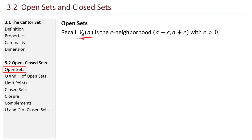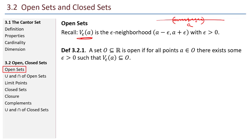Recall this notation: V sub epsilon of a is the epsilon neighborhood about a, with epsilon greater than zero. I imagine there's a number line with a on it. I go epsilon to the left, epsilon to the right. I don't include those endpoints, but I make the interval containing everything within epsilon of a. That is the epsilon neighborhood of a. Here's our definition: a set O contained in the real numbers is open if for all points a in O, there exists some epsilon greater than zero such that the epsilon neighborhood about a is entirely contained in O.